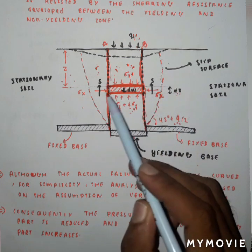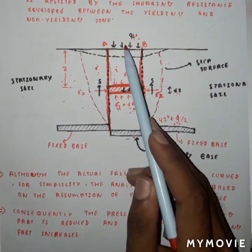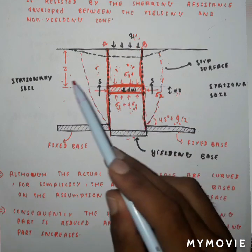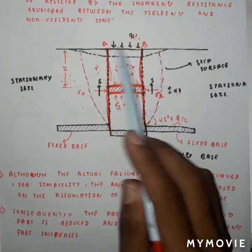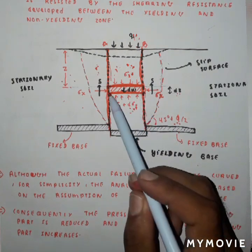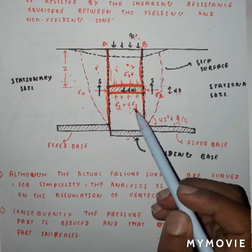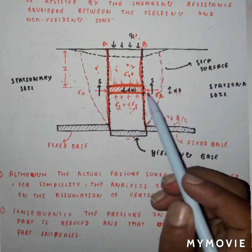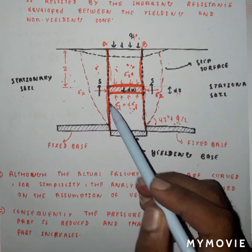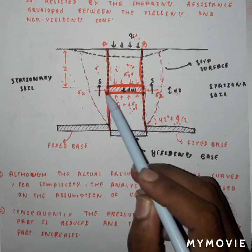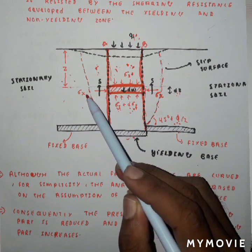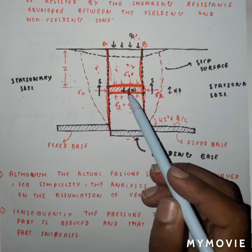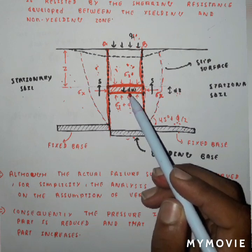Now let us consider a small strip in the yielding portion of this soil mass. The thickness of this strip is dz, and this strip is located at a distance z from the upper portion of the soil mass. The total vertical stress acting on the upper portion of the strip is σz = γz + q, where q is the uniform surcharge acting at AB. The total vertical stress acting at the bottom of the strip is σz + dσz. σx is the horizontal stress acting on the strip, and dw is the weight of the strip acting downward.